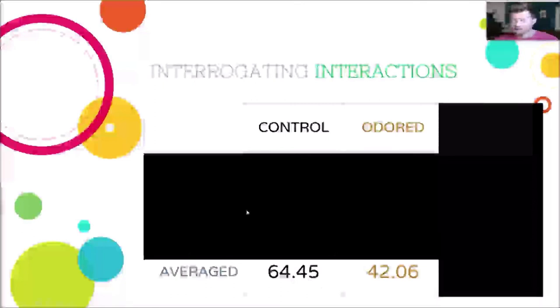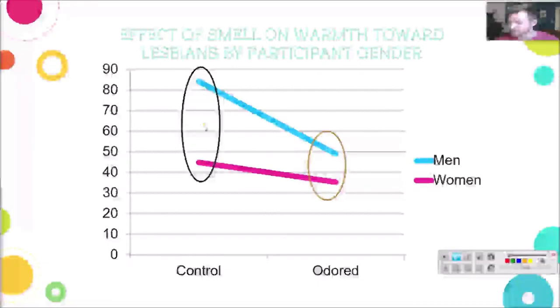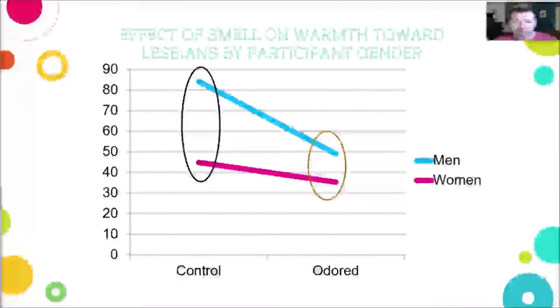In a two-way ANOVA, you have two main effects and one interaction effect. The main effect of condition — the smell — asks: does the presence of a malodorous stimulus cause different warmth toward lesbians? The two marginal means reflect the control and odor conditions. The control condition is higher than the odor condition. We'll talk about significance testing, but descriptively, if the room doesn't smell, on average regardless of gender, people seem more warm toward lesbians. You can see this by averaging the lines in the graph.